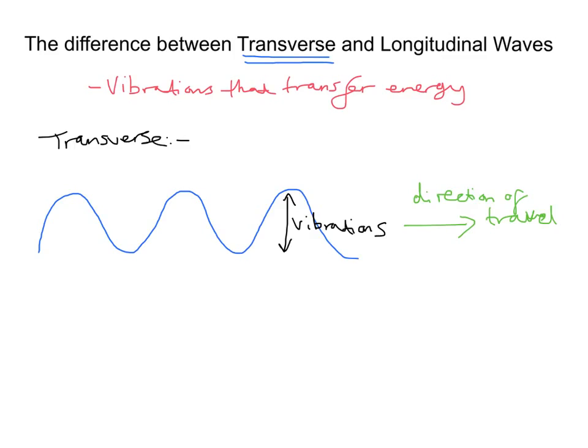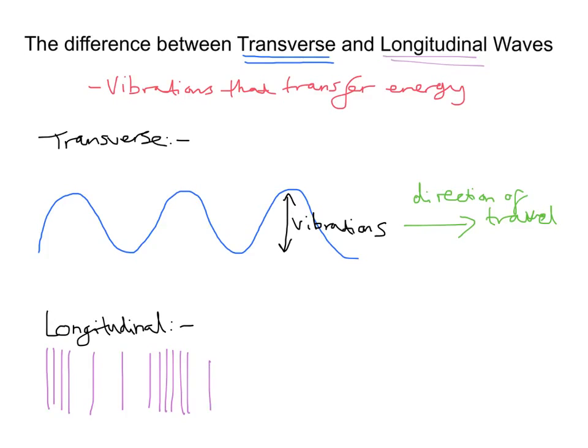So that's what a transverse wave would look like. But a longitudinal, let's consider the longitudinal wave. The longitudinal wave is slightly different. Because the longitudinal wave, if I just draw this for a moment, you can see it looks slightly different. It's not got such a curved shape. With a longitudinal wave, what we have essentially, are vibrations occurring in the same direction as travel.